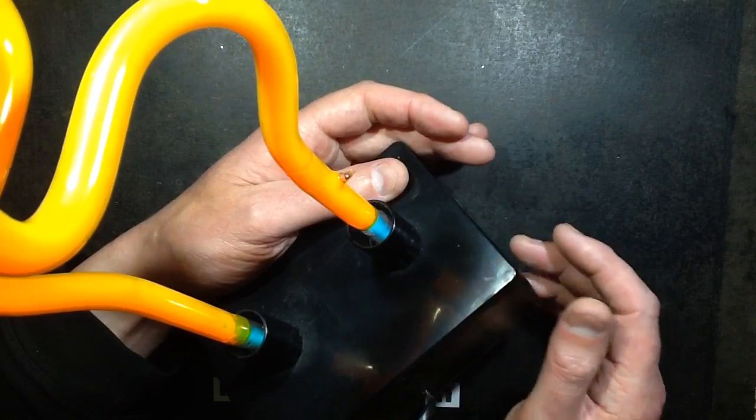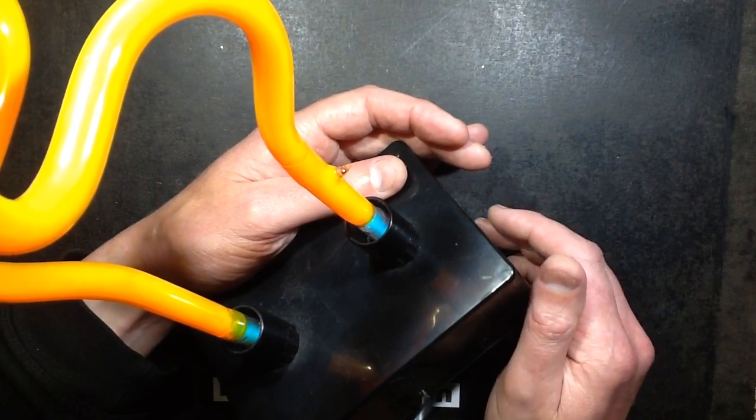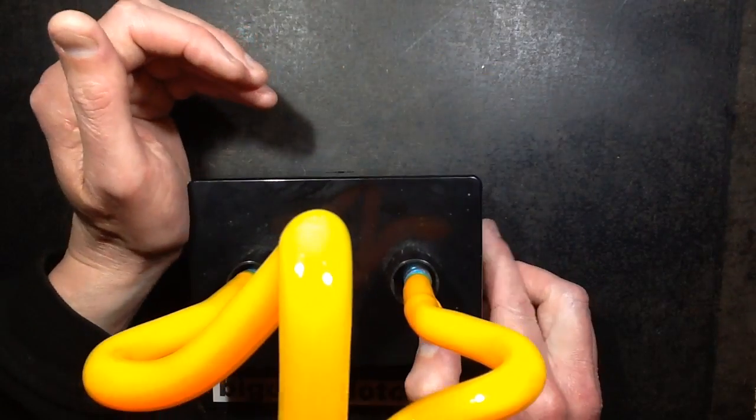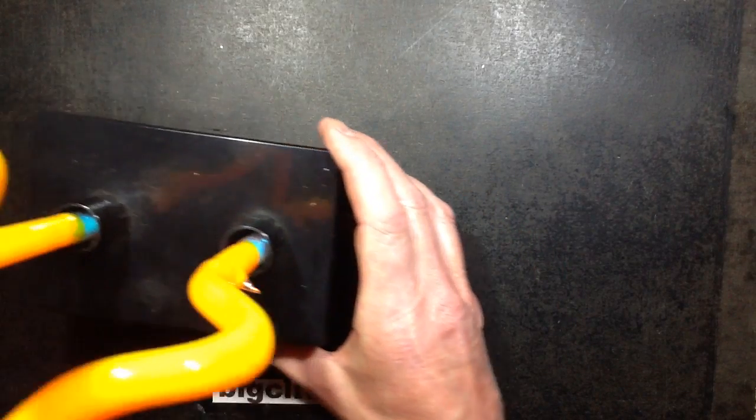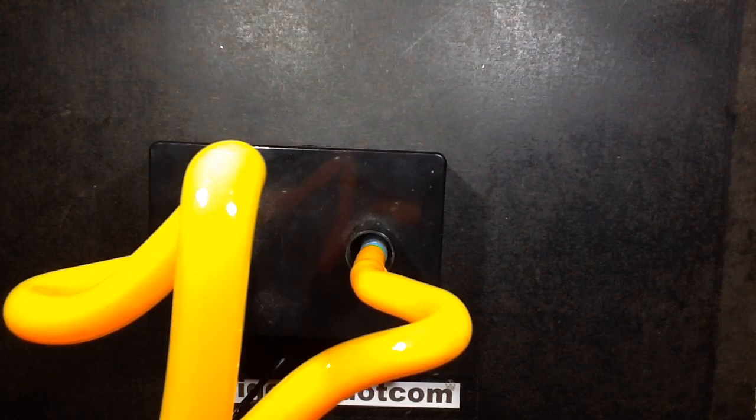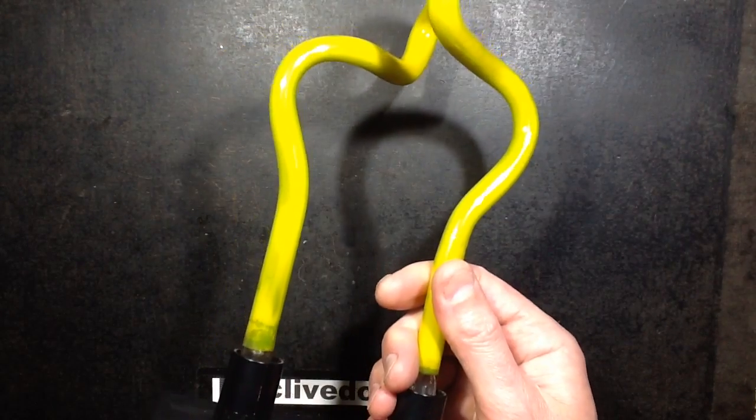I suppose technically speaking it should be called an argon mercury tube but everybody just says neon tube because ultimately that's the image you get. So here's the circuit I'm driving this with. Actually you know what, I shall show you one of my other power supplies. I'll just unplug this at the moment, showing the raw yellowness of the glass. My other power supply, if I can now find it, here it is.